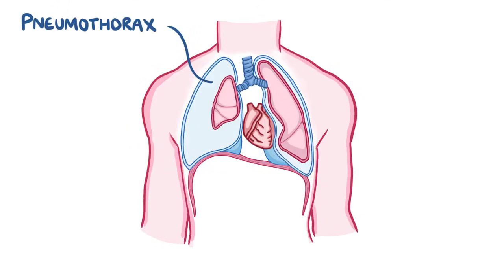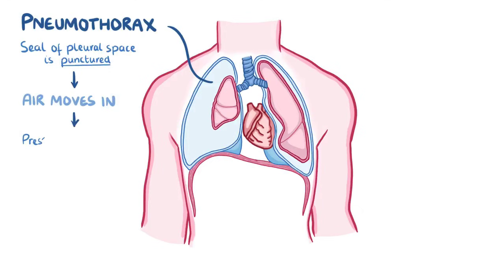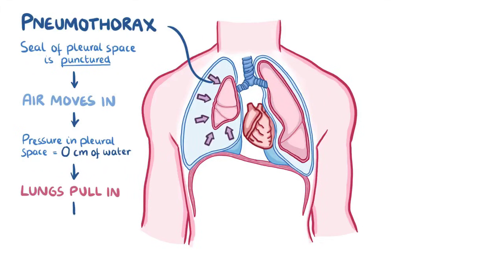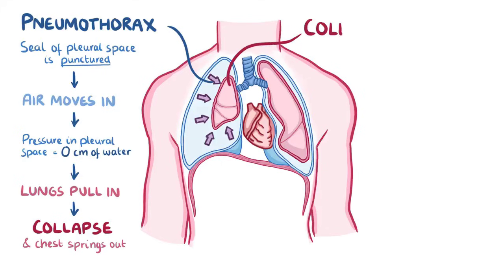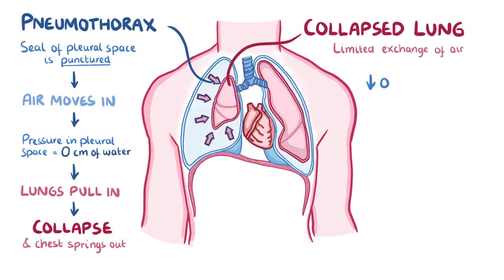A pneumothorax forms when the seal of the pleural space is punctured and air moves in from the outside, making the pressure in the pleural space equalize to zero centimeters of water. Since the negative pleural pressure is lost, the two opposing forces no longer pull on one another. As a result, the lungs pull inward and collapse, and the chest wall springs outward. A collapsed lung limits air exchange, reducing oxygen intake and causing a build-up of carbon dioxide.